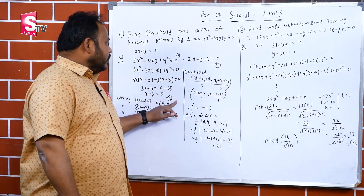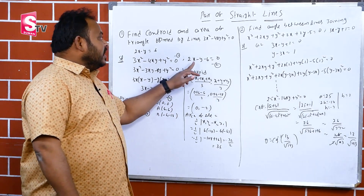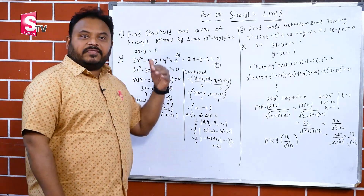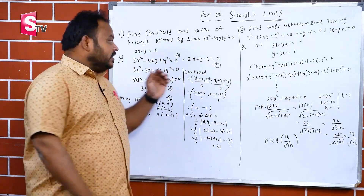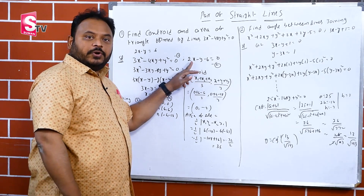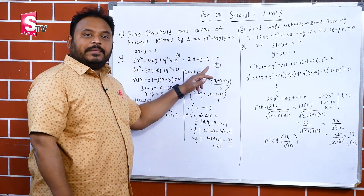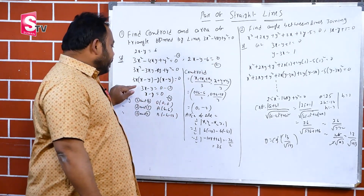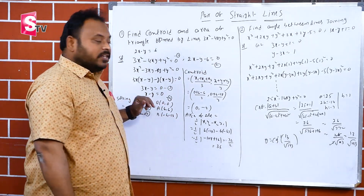We now have three lines: 3x−y=0 (line 1), x−y=0 (line 2), and the third line 2x−y=6, rewritten as 2x−y−6=0 (line 3). We have identified all three lines.